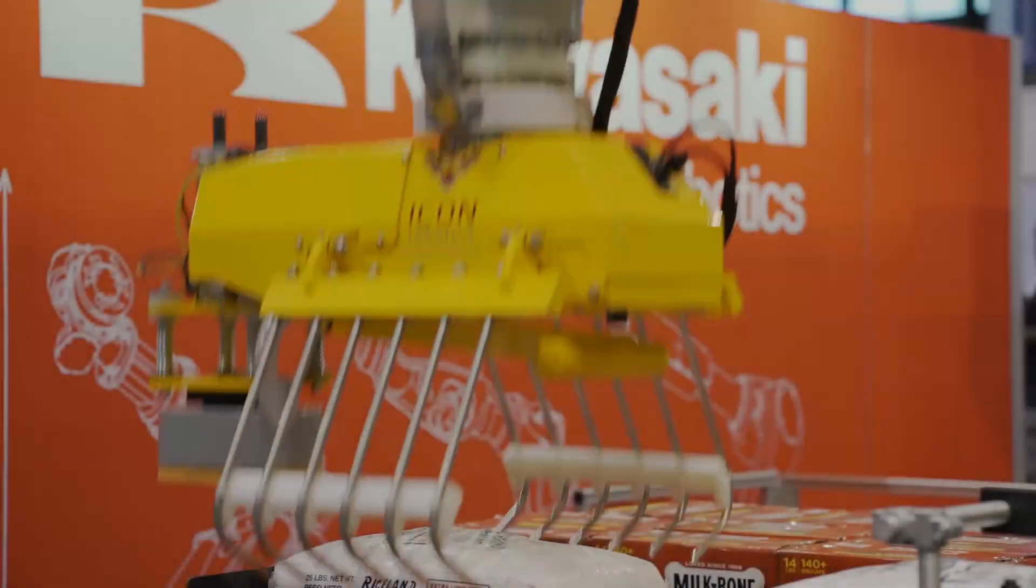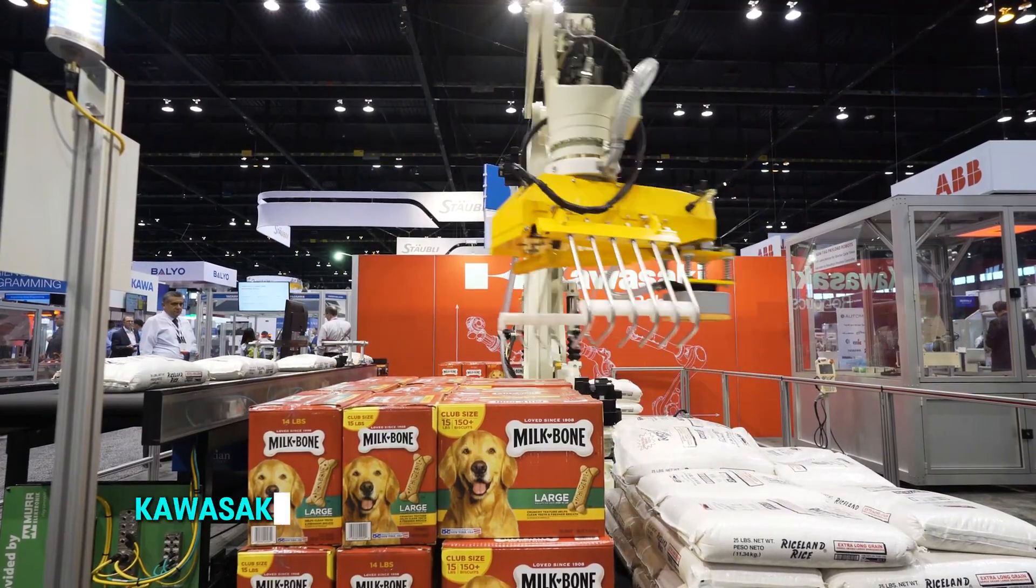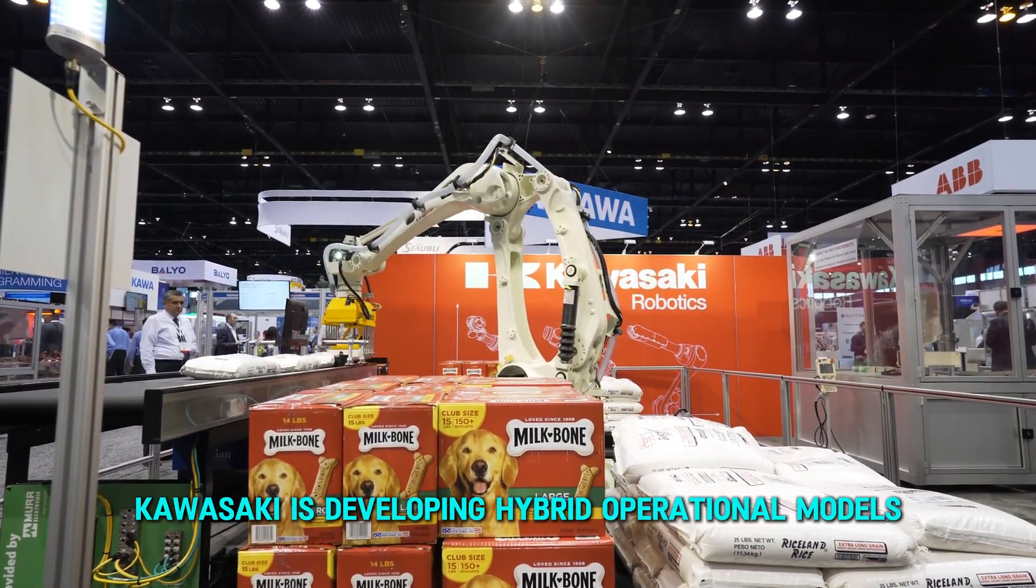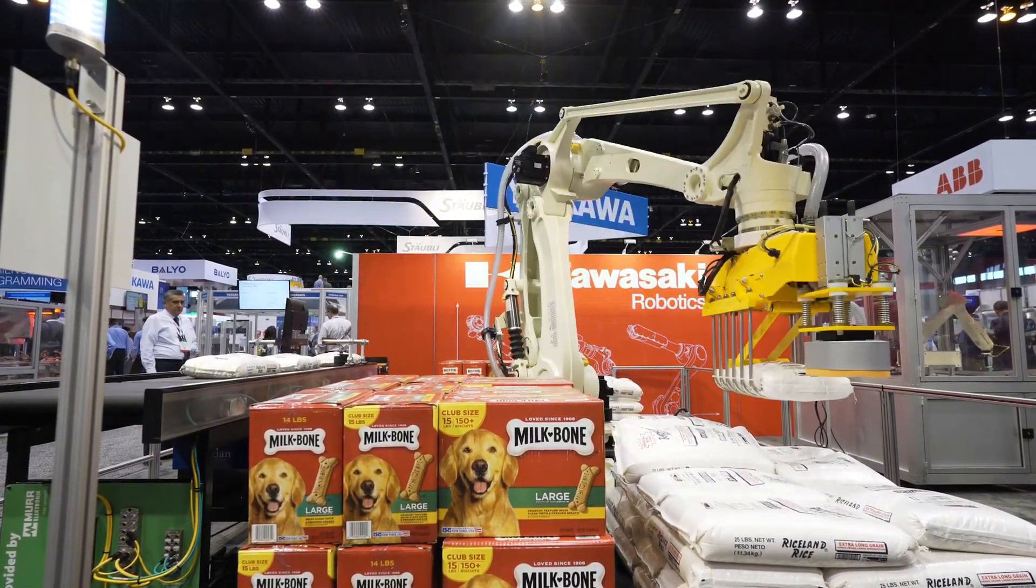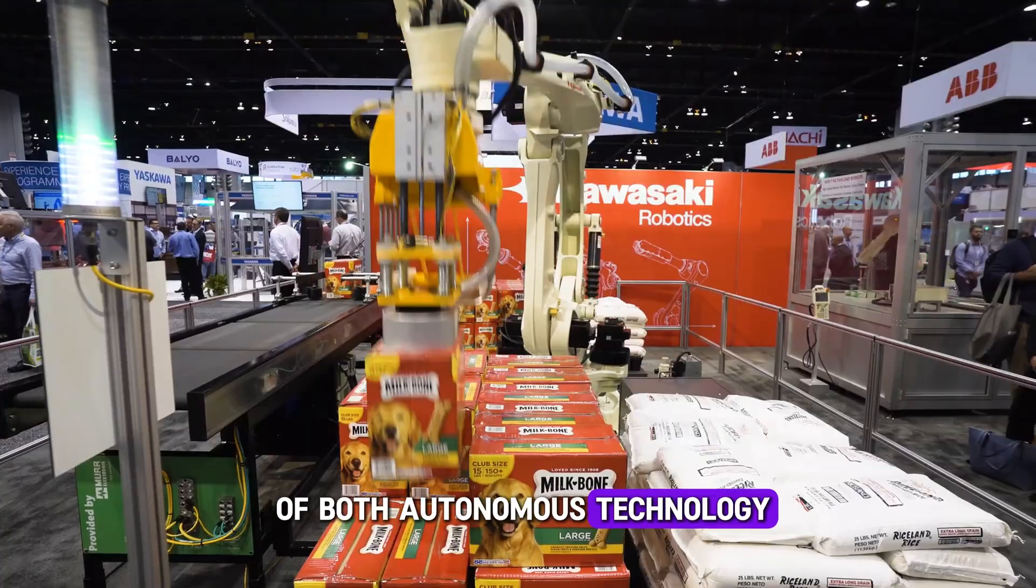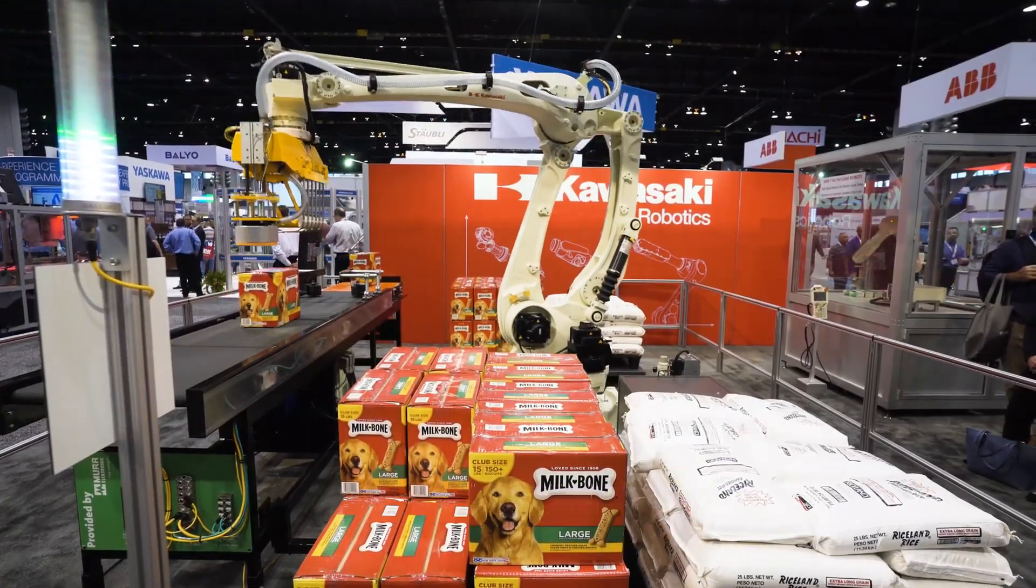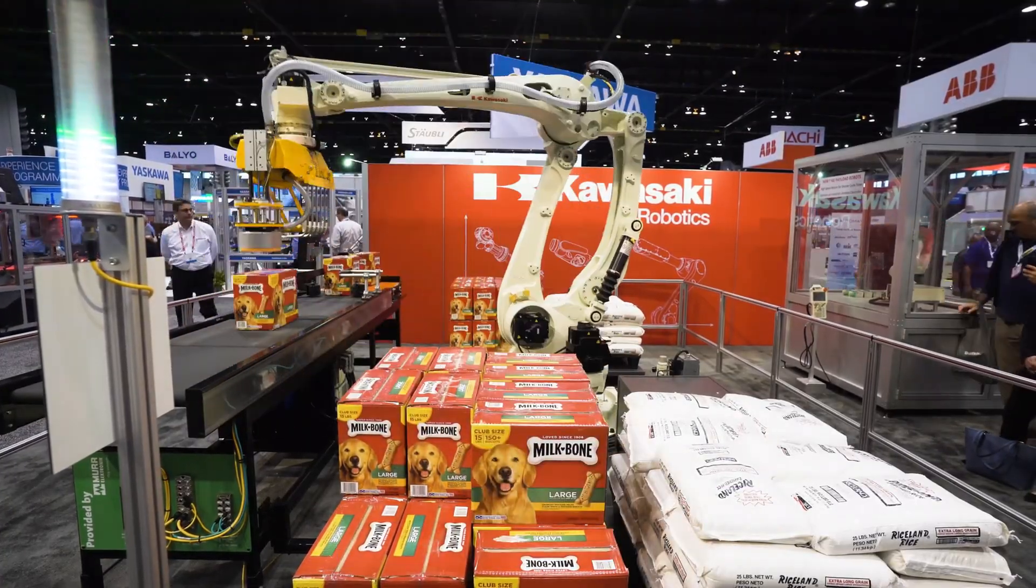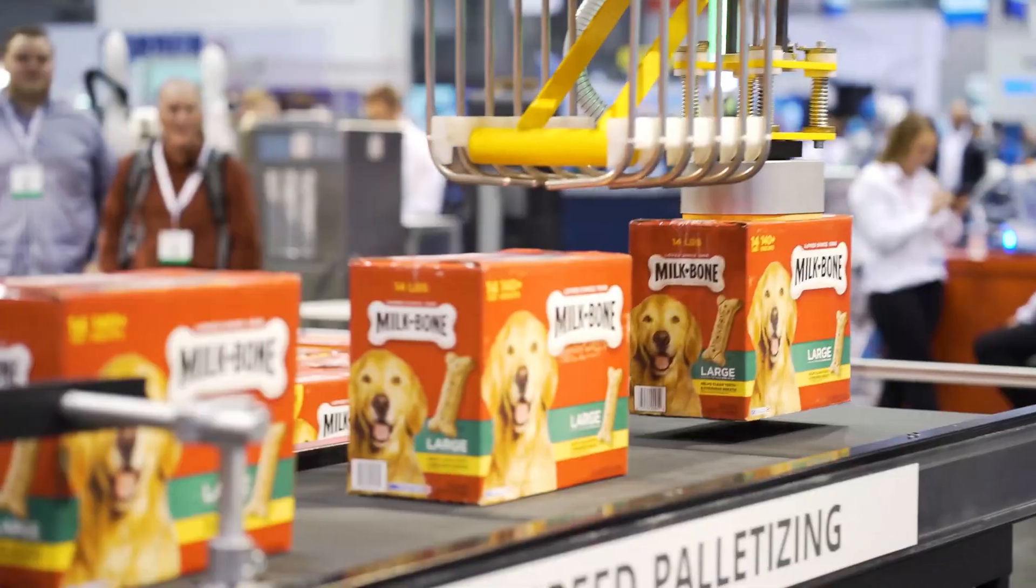In envisioning the future of robotics in the workplace, Kawasaki is developing hybrid operational models for the Kaleido-8.0, which combine the best of both autonomous technology and human expertise. In this model, the robot handles routine, repetitive tasks independently.